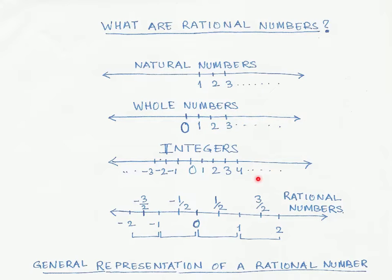Now if we look at natural numbers, whole numbers, and integers, you can see that the distance between two consecutive numbers is one unit. It could be one centimeter or any unit distance, but essentially the difference between two consecutive numbers is always one.